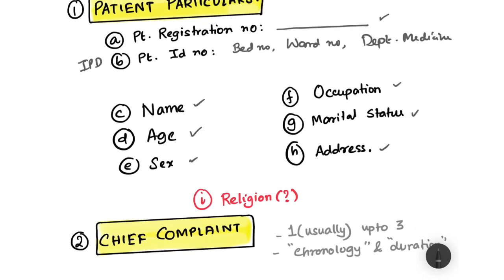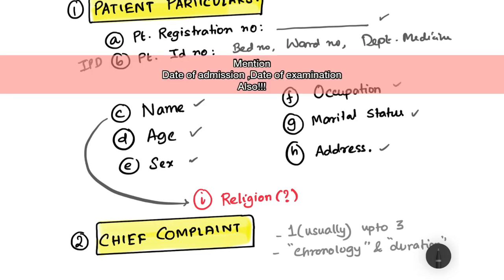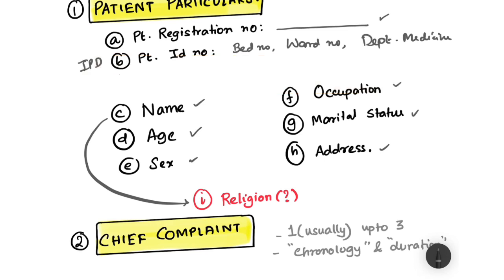Finally, there is the point of religion. Sometimes you can infer religion from the name itself. Certain religious practices are medically relevant — for example, circumcision is specific to Islam and has protective benefits against penile cancer. However, don't ask about religion bluntly, as many patients find it a sensitive topic. Be intelligent and ask about religion only if required. This is marked with a question mark as it depends on your professor and institution.